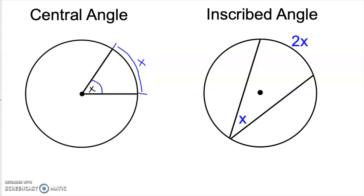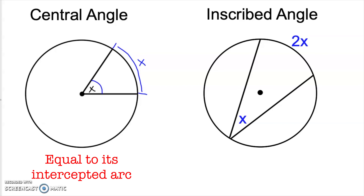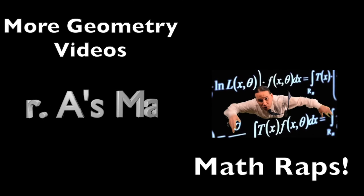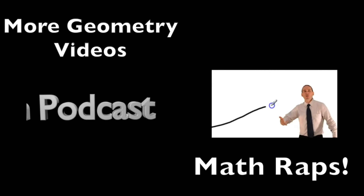All three cases together cover every possible inscribed angle we could have, so I'm going to go ahead and put a proof box there. That's going to do it for this video. Just to recap, the two angles we talked about were central angles and inscribed angles. A central angle is formed by two radii and has a vertex at the center of the circle — it's always equal to its intercepted arc. An inscribed angle, on the other hand, is formed by two chords, its vertex is on the circle itself, and it is always equal to one half of its intercepted arc.